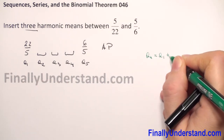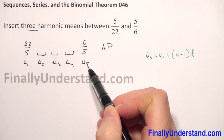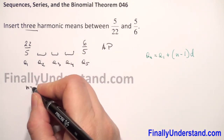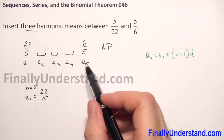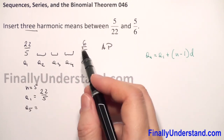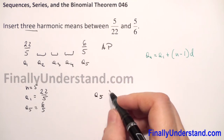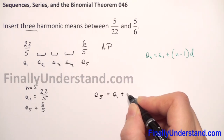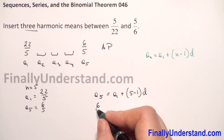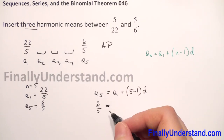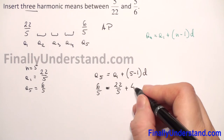The formula is: a_n equals a1 plus (n minus 1) times d. In our example, n is 5. a1 is equal to 22 over 5, and the fifth term of the arithmetic progression is 6 over 5. So the fifth term equals a1 plus (5 minus 1) times d, giving us: 6 over 5 equals 22 over 5 plus 4 times d.